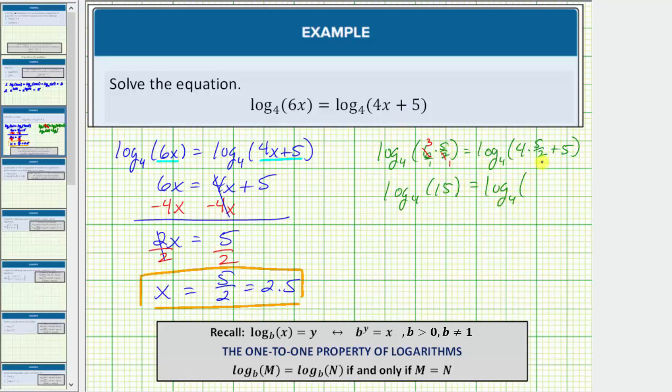Again, simplifying before multiplying on the right side, we can cancel factors in 4 times 5/2. The product is 2 times 5 which is 10. The right side is log base 4 of 10 plus 5. Well, 10 plus 5 is 15.